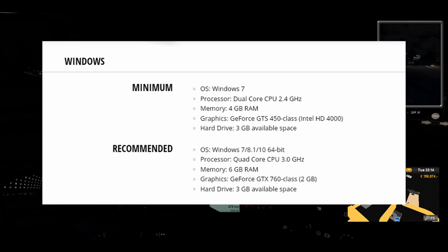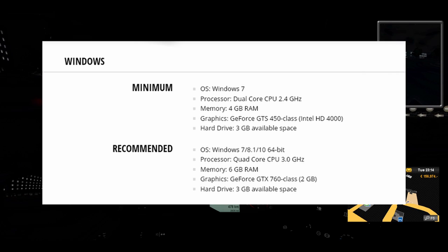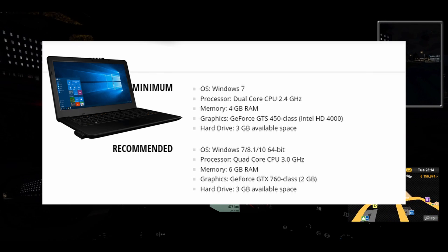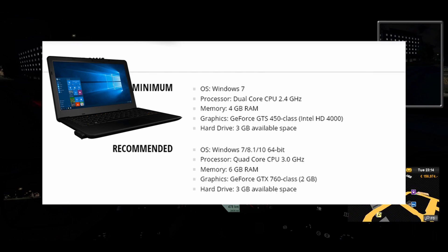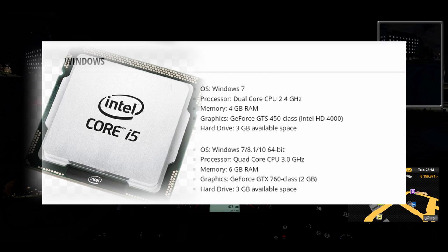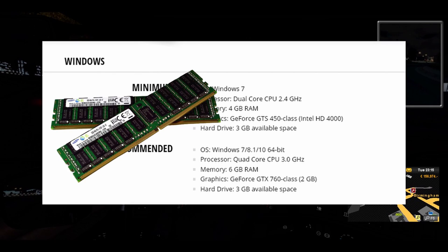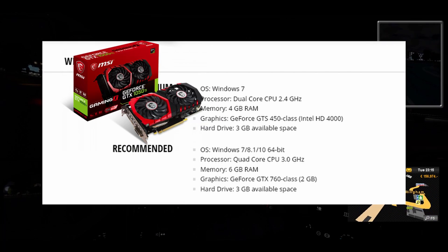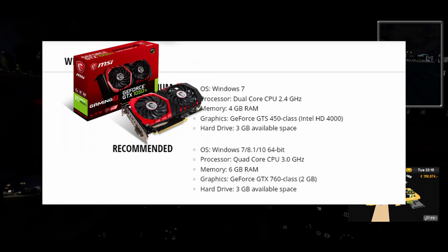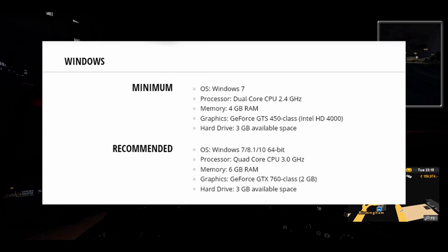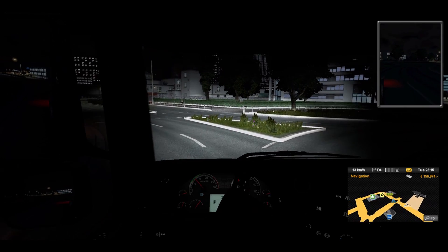Now I will tell you about the recommended specs. Windows is 7, 8, or 10, 64-bit OS. If you look at the processor, it has 3.0GHz. Memory is 6GB RAM. If you look at the graphics, there will be GeForce GTX 760 class with 2GB graphics. There will be 3GB available space. This is the recommended.